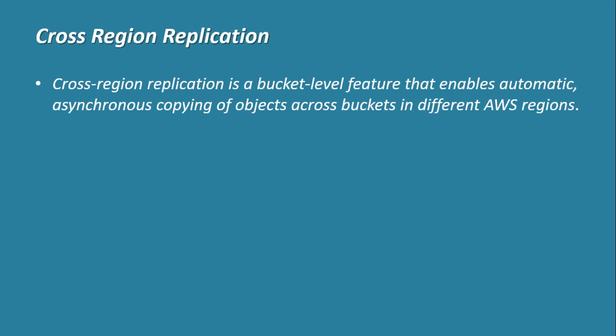Cross-region replication: as we all know, S3 is an object-based storage where we can store different files and objects such as MP3 files or video files. Cross-region replication is a feature that allows you to replicate data from one bucket to another bucket in a different AWS region — that is why it is called cross-region replication, because we are copying data across different regions. One important thing to remember is that it is an asynchronous copy, meaning if there is data in a source bucket X that needs to transfer to bucket Y, AWS needs some time to replicate it to the destination bucket — it is not an immediate effect.